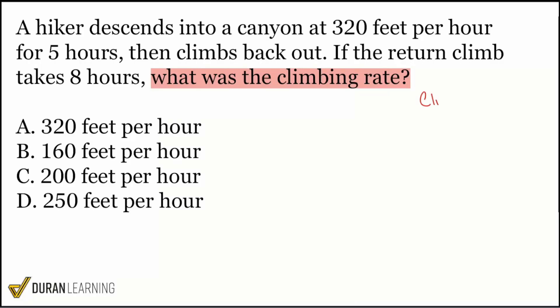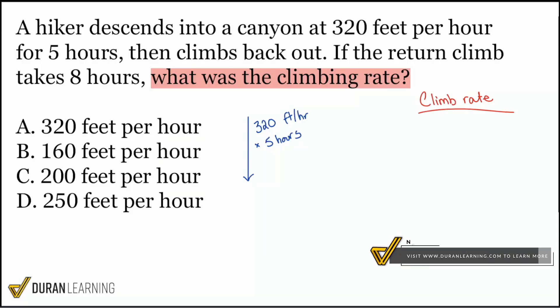Nice and easy. So we want that climb rate. When we take a look at the information given, it says a hiker descends into a canyon at 320 feet per hour for five hours and then climbs back out. So when we're descending into the canyon, we're going down 320 feet per hour, and this is over five hours.